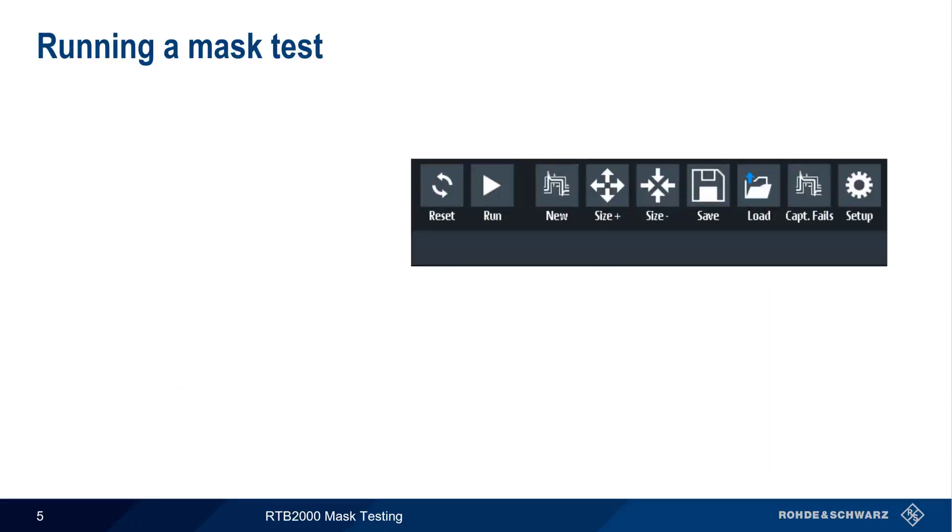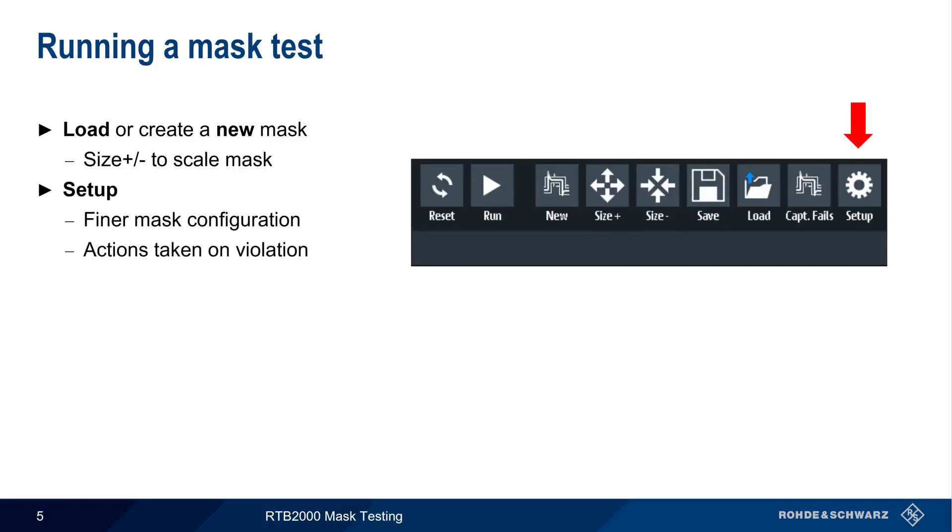The first step in running a mask test is to load or create a new mask. The Size Plus and Size Minus buttons are then used to scale the mask, something we'll go over in more detail in just a moment. The Setup button can be used for finer or more granular specification of the mask, as well as to define any actions to be taken when the mask is violated.